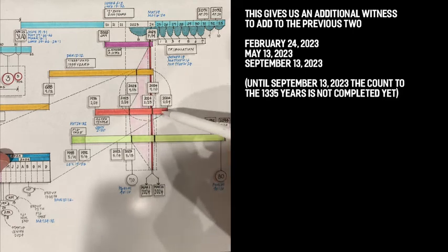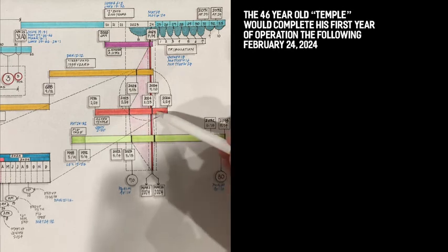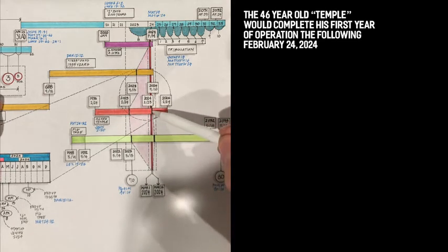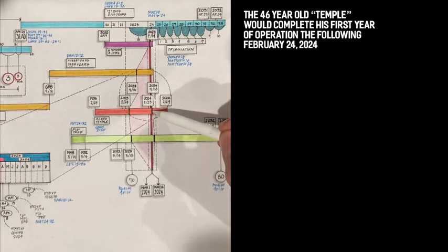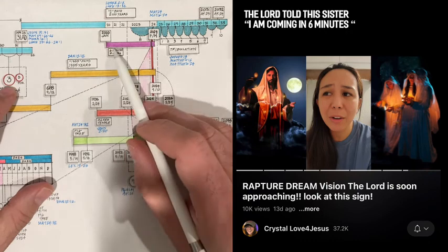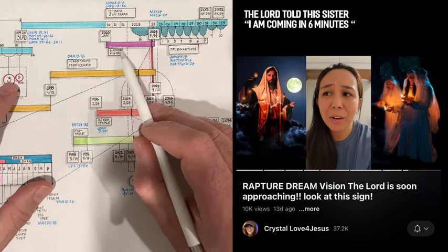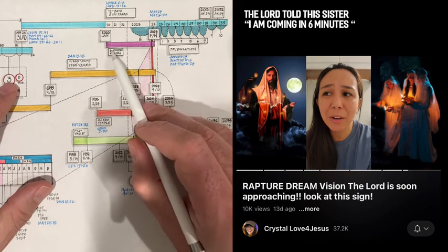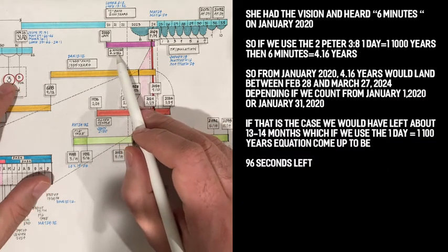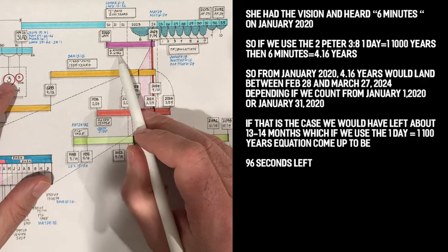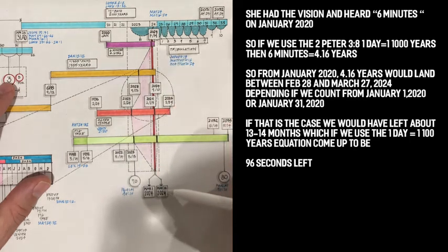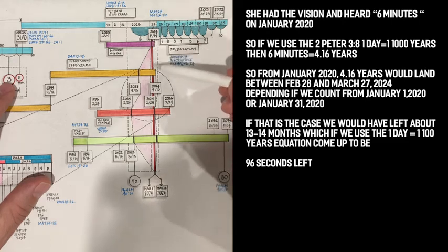Then as we move on, we would have the temple completed in the 71st year all the way to February of the following year, 23 of February 2024. That will be the first year completed of the first year, 60 year temple in operation. So then we have additional confirmations. One that I have looked at carefully is this sister who speaks about having a vision where the Lord appeared to her and told her, I will be coming. I will be there in six minutes. She had the vision on January 2020. Now, if we use the calculation that one day equals a thousand years, then six minutes equal 4.16 years. And 4.16 years will take us exactly between March 1st and March 26th of 2024. In other words, right at the beginning of 2024.